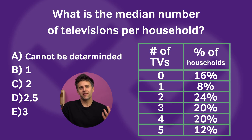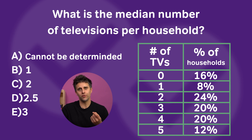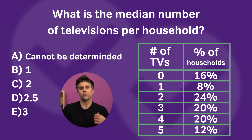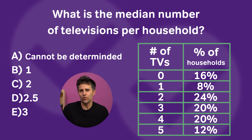Notice all these numbers. They're asking us: what is the median number of televisions per household? Meaning we have households that have zero televisions, one television, two televisions, etc. What does median actually mean though? Do we have to calculate all these numbers?